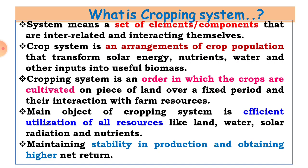In the last lecture, we have seen the definition of cropping system. What is meant by cropping? Cropping means cultivation of different crops. What is meant by system? System means a set of elements or components that are interrelated or interacting among themselves — also called enterprises. Different enterprises which are related to each other — that is called a system.